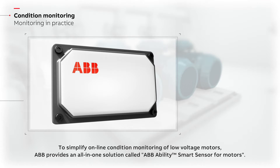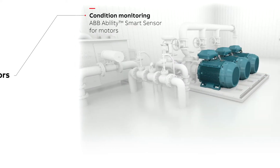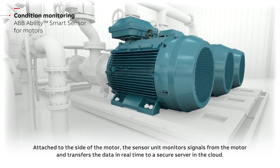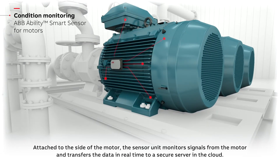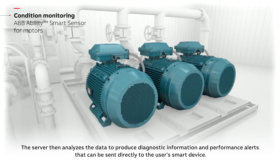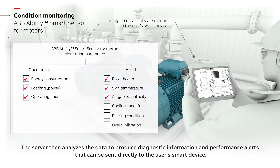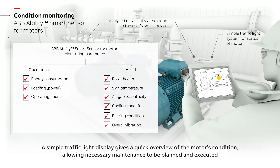To simplify online condition monitoring of low voltage motors, ABB provides an all-in-one solution called ABB Ability Smart Sensor for motors. Attached to the side of the motor, the sensor unit monitors signals from the motor and transfers the data in real time to a secure server in the cloud. The server then analyzes the data to produce diagnostic information and performance alerts that can be sent directly to the user's smart device.